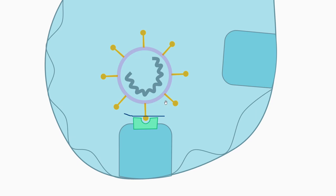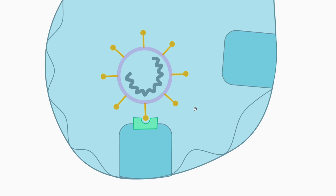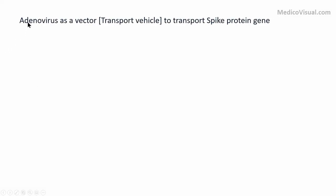What we do is that we try to generate the immune response against these spike proteins. We generate immune response against these spike proteins to block the entry of coronavirus into the cell, as well as to kill this coronavirus before it can cause disease. These vaccines use adenovirus as a vector or transport vehicle to transport the spike protein gene into the cell, and then the cell will synthesize the spike protein and train the immune system to fight against it.